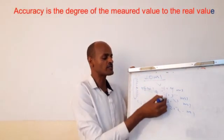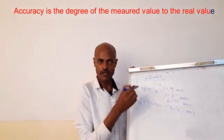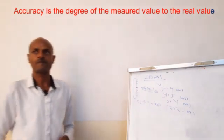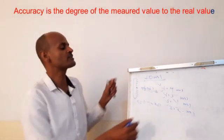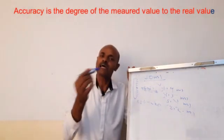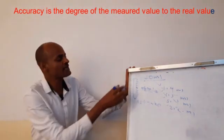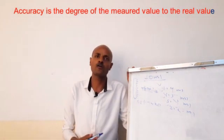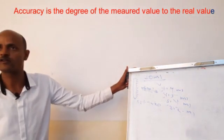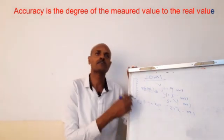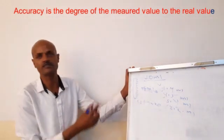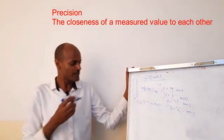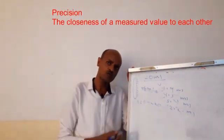4.9 is more accurate than the rest. Accuracy is the degree of closeness of the measured value to the real value.